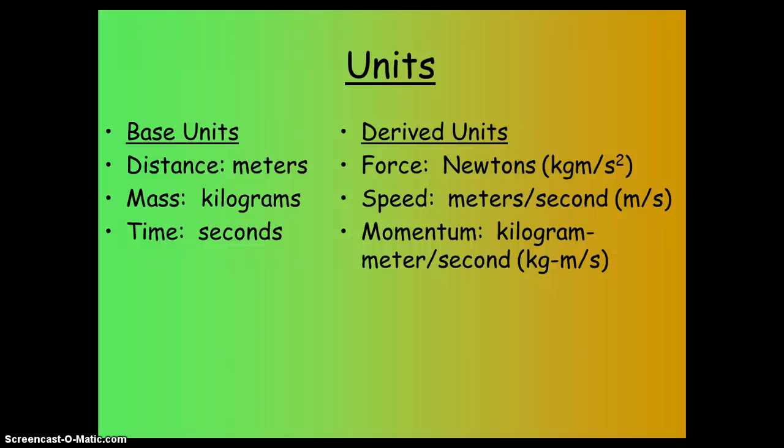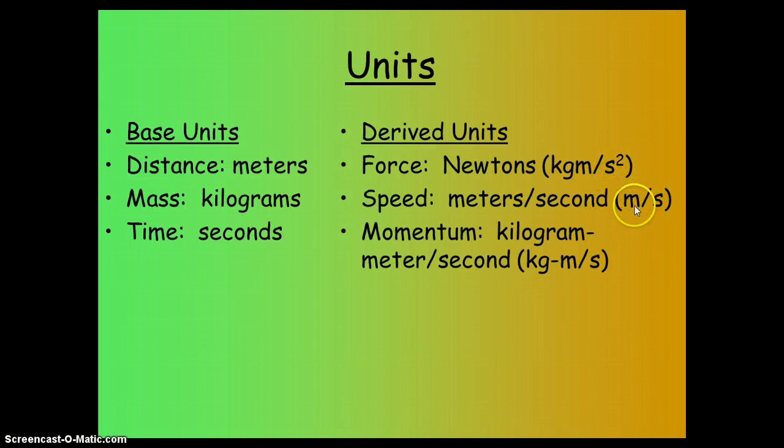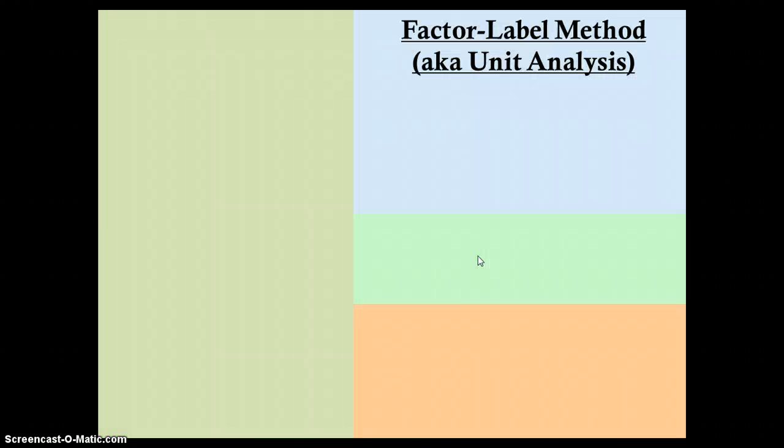Two types of units. We already talked about the base units. Certain quantities we talk about in here combine the base units to form what we call derived units. So the units for force are newtons, and that's basically mass times distance divided by time squared. All these units on the right are different combinations of the base units, which makes them derived units.